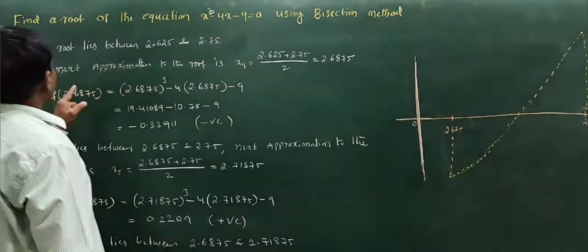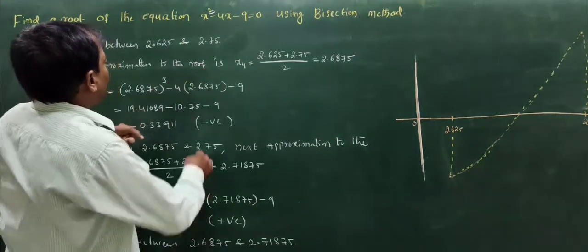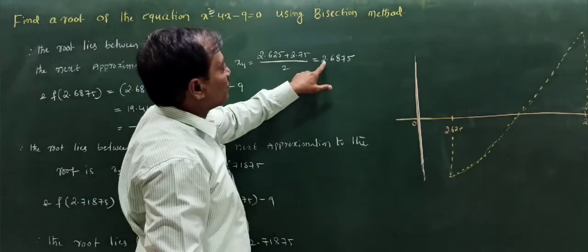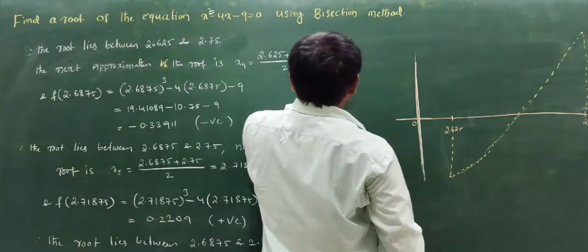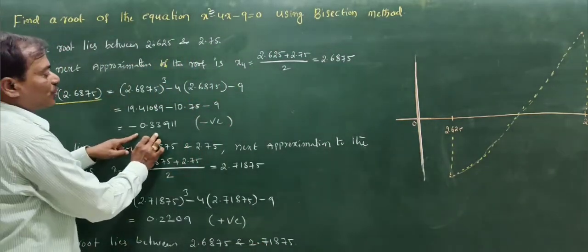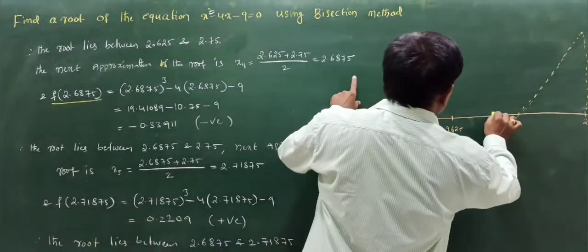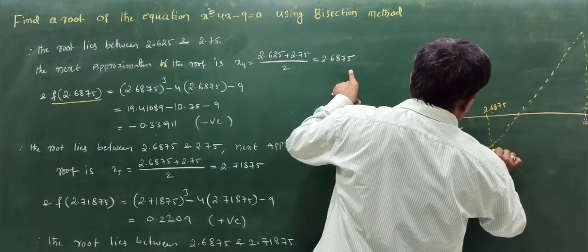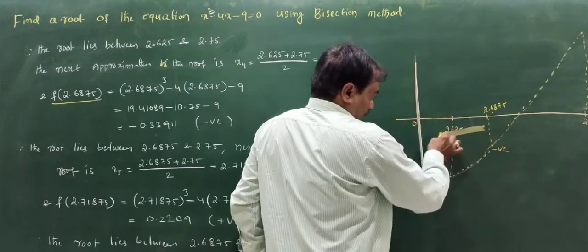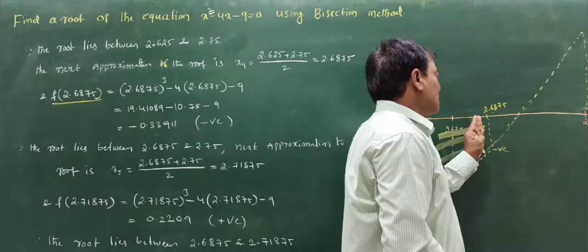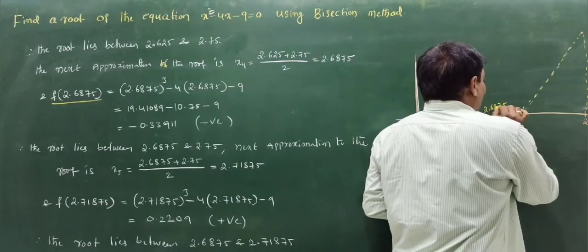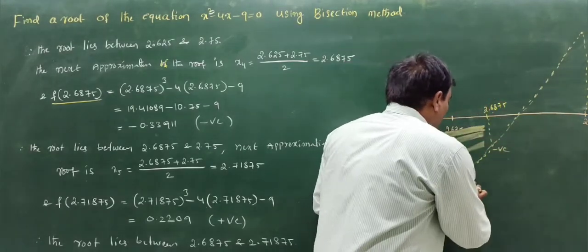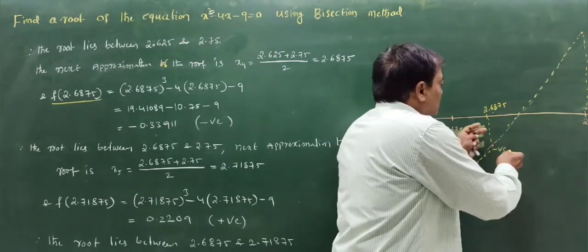The fourth approximation: x4 = (2.625 + 2.75) / 2 = 2.6875. The function value at this point is negative. Since both f(2.625) and f(2.6875) are negative, the root does not lie in [2.625, 2.6875], so we consider the interval [2.6875, 2.75].